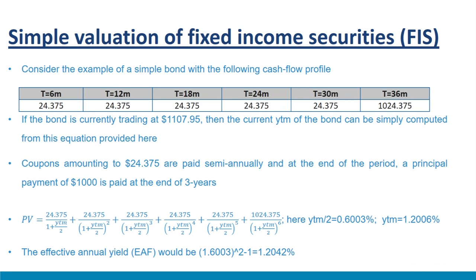The division by 2 indicates semi-annual compounding, so the yield is quoted in annual terms at 1.2006 percent. The effective annual yield (EAY) would be (1.006003)² − 1 = 1.2042 percent, which is higher than the quoted annual rate. In summary, the cash flows on fixed income securities include regular interest payments and a principal payment at maturity. If cash flows are discounted at the yield to maturity, one obtains the current price of the fixed income security.